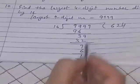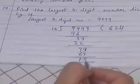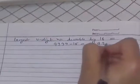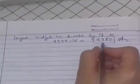When it will be completely divisible? When remainder is 0. So subtract remainder from this. Largest 4 digit number divisible by 16 equals 9999 minus remainder, which is 9984. This is the largest 4 digit number which is completely divisible by 16.